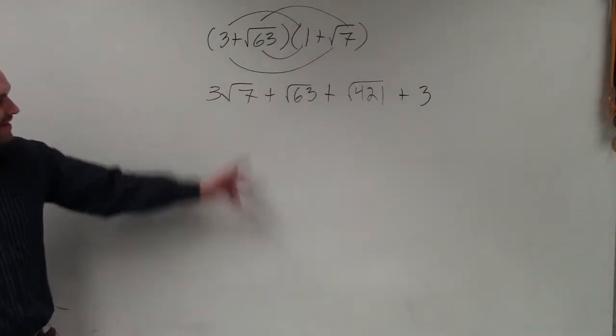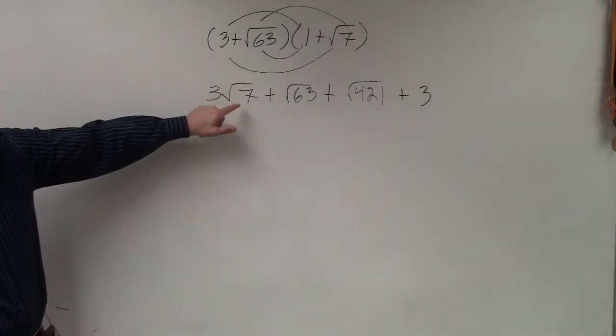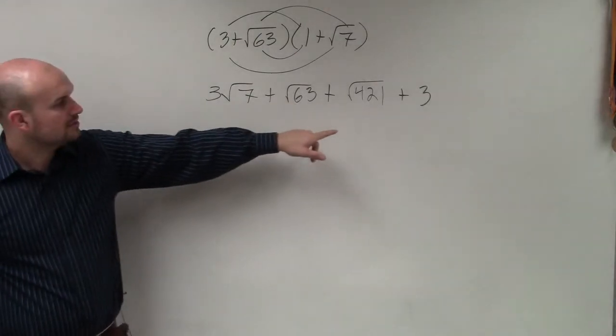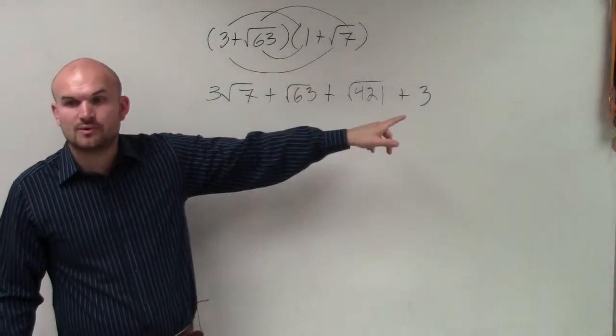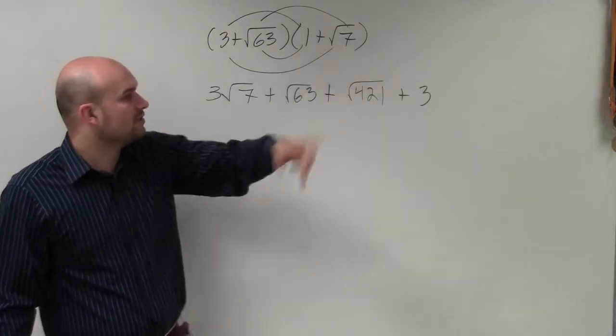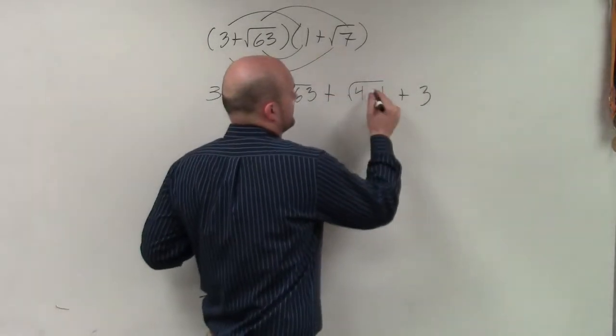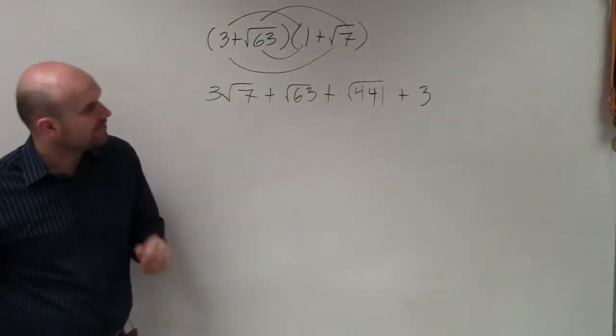Now, I just need to simplify. Well, square root of 7, I can't simplify. Why did you get 421? Well, because 7 times 60 would be 420. So you have 7 to 441? 441, sorry. Right? Thank you. 441.